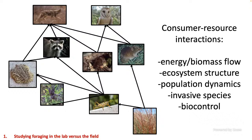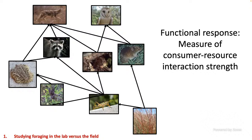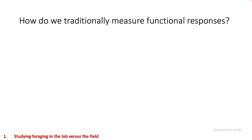Consumer-resource interactions structure communities, shape ecosystems, and drive population dynamics. They can also help us understand the success of invasive species and biocontrol agents. Understanding these interactions is really critical to our understanding of what's going on in natural systems. When we think about these interactions, we're really interested in the strength of those interactions — the magnitude of that arrow connecting two links in a food web. How quickly or how often does a predator eat a certain kind of prey? Functional responses are a way to measure those interaction strengths, helping us describe the flow of energy or biomass through food web links, which ultimately helps us describe population dynamics and community composition.